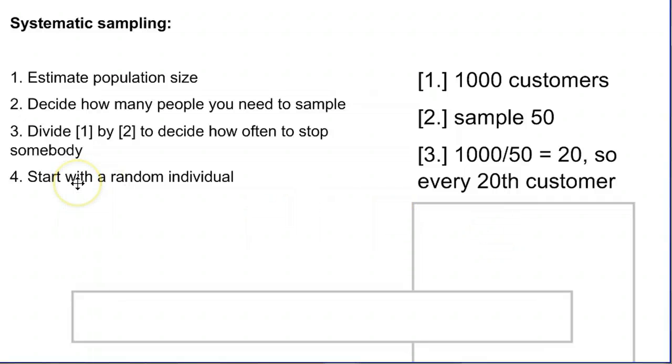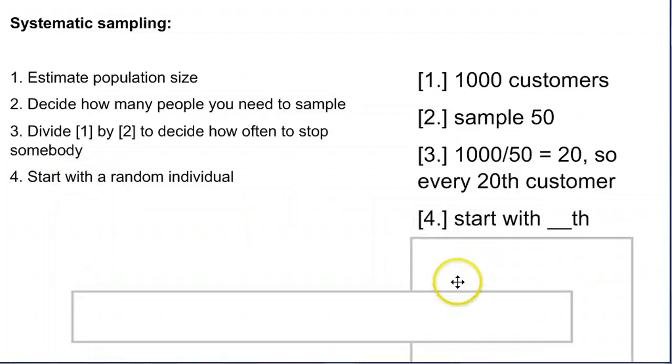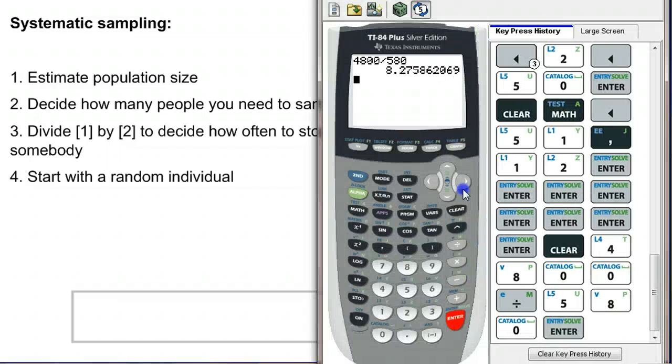And then the last thing is starting with a random individual. The way we can do that is if we're sampling every twentieth customer, let's take out our calculator and randomly choose a number between 1 and 20.